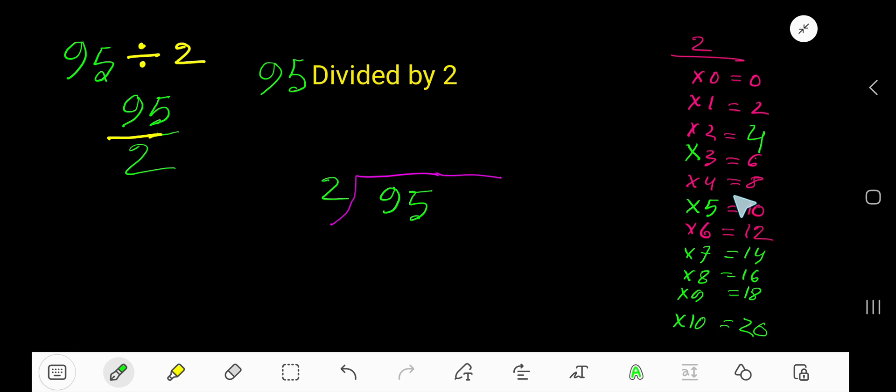So we have to stop here. 2 goes into 9 four times. Now multiply: 4 times 2 is 8. Subtract 1, bring down this 5. 2 goes into 15 how many times? 8 times 16.